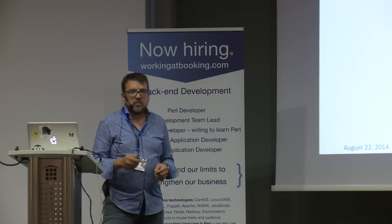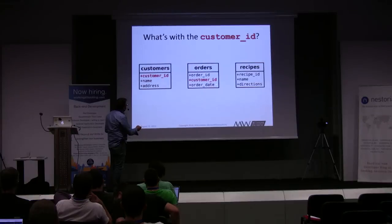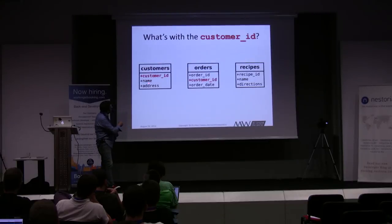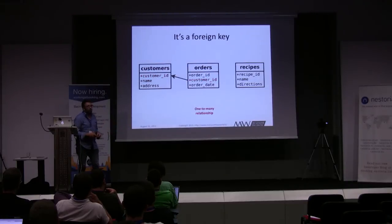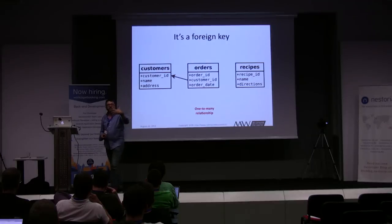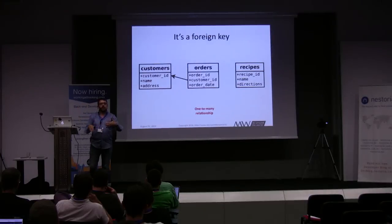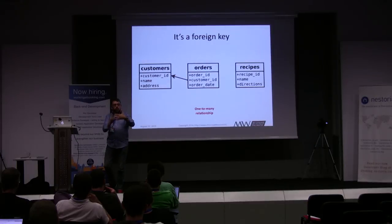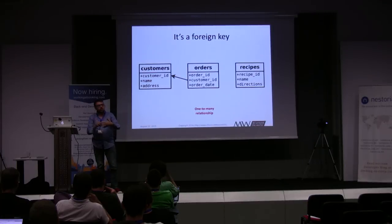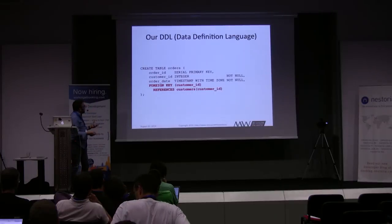Rule number one: nouns equal tables — very simple. But what about that customer ID in the orders table pointing to the customer's customer_id? That's what we call a foreign key. One customer can have many orders — a one-to-many relationship. Orders belong to the customer, so orders must have a customer ID identifying which customer. We put a foreign key constraint there. In DDL — that's data definition language — it looks like: CREATE TABLE orders … FOREIGN KEY customer_id REFERENCES customers(customer_id). This is PostgreSQL syntax.